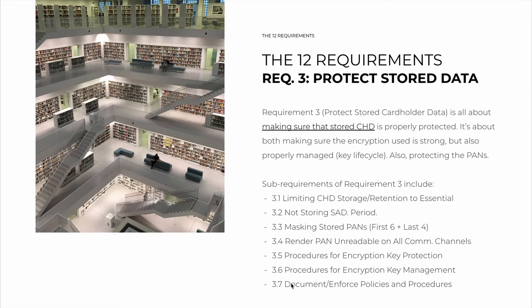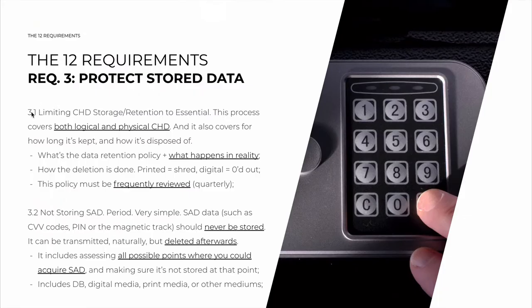And finally, 3.7 is the customary document and enforce all of these policies and procedures, so all of these points must not be done informally but instead with written down policies that are put into practice. So first comes requirement 3.1: cardholder data must be limited in terms of what is stored and what is retained. This process covers both logical and physical cardholder data — so both databases, but also paper receipts or copies that contain card numbers. It also covers for how long it may be kept and how it's disposed of. So first, you need a data retention policy: what data are kept and for how long, and this must be what happens in reality.